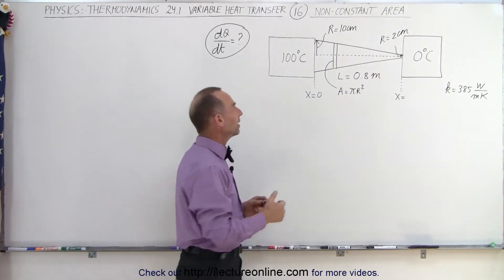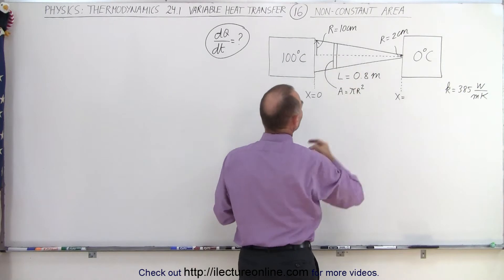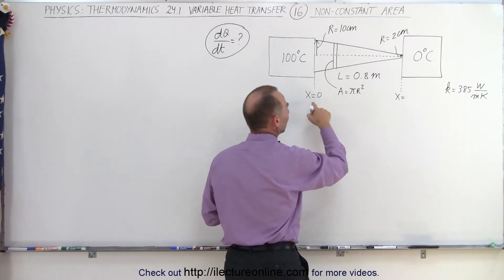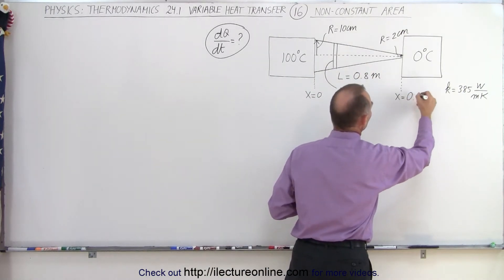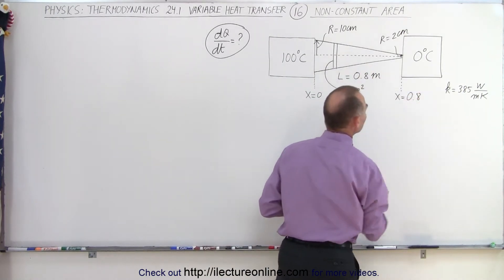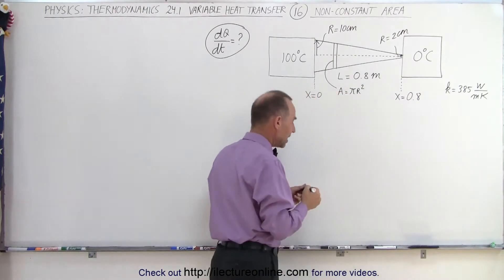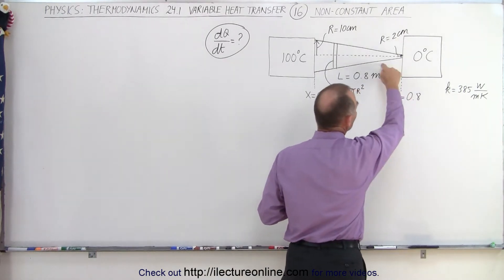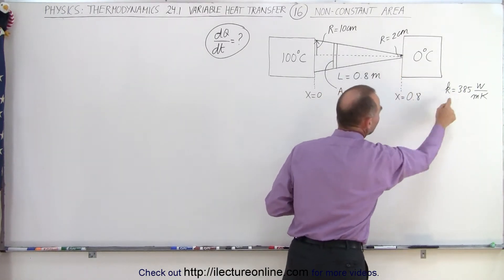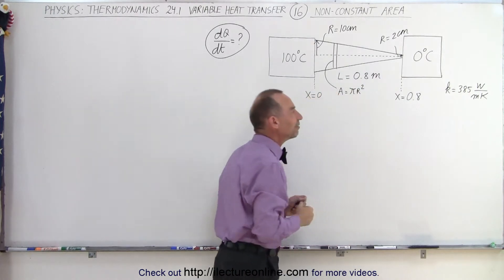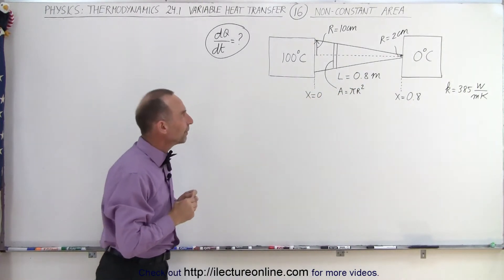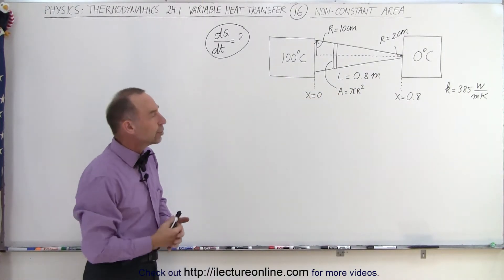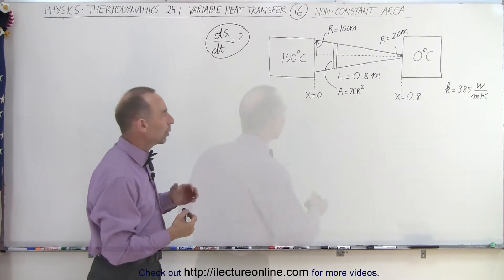The length of the pad is 0.8 meters, so x on the left side is 0 and on the right side is 0.8. The conductivity constant, assuming it's made out of copper, is 385 watts per meter per kelvin. What will dQ/dt be, and how do we figure that out?